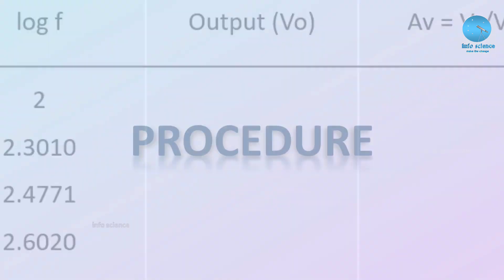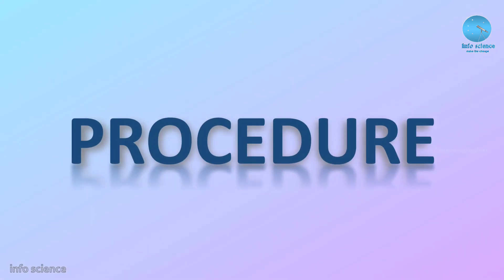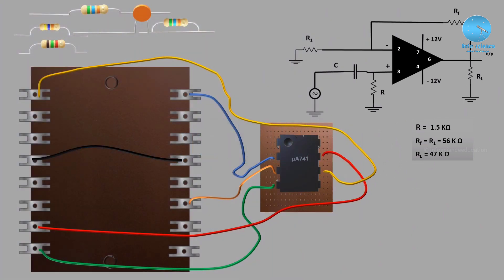We are moving to the procedure of this experiment. For the first order high pass filter circuit, we have to arrange the circuit and place the Op-Amp IC. In the Op-Amp IC, we have to make connections at pins 2, 3, 4, 6, and 7.